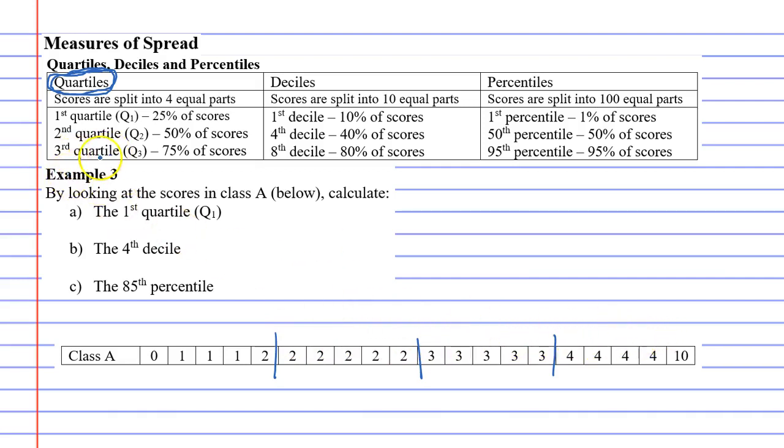So in example three it says by looking at the scores in class A below calculate the first quartile. So the first quartile is represented by this position here. This is our third quartile and the middle one is our median but can also be called the second quartile. So the first quartile is two. So that's the answer for question A. That involves splitting your data into four equal parts.